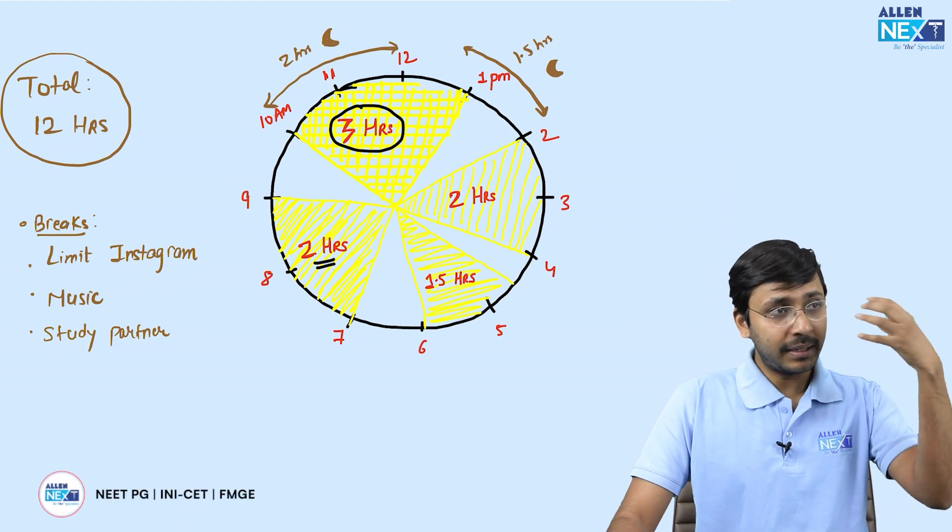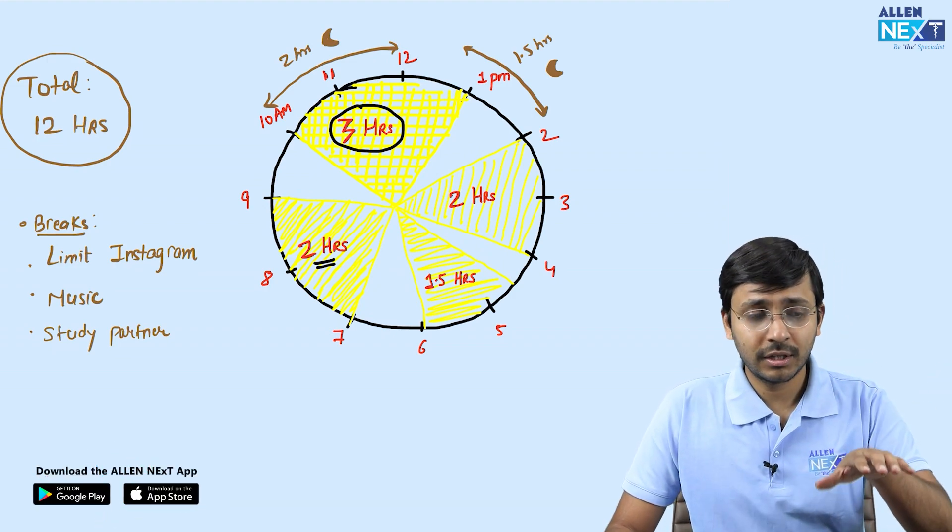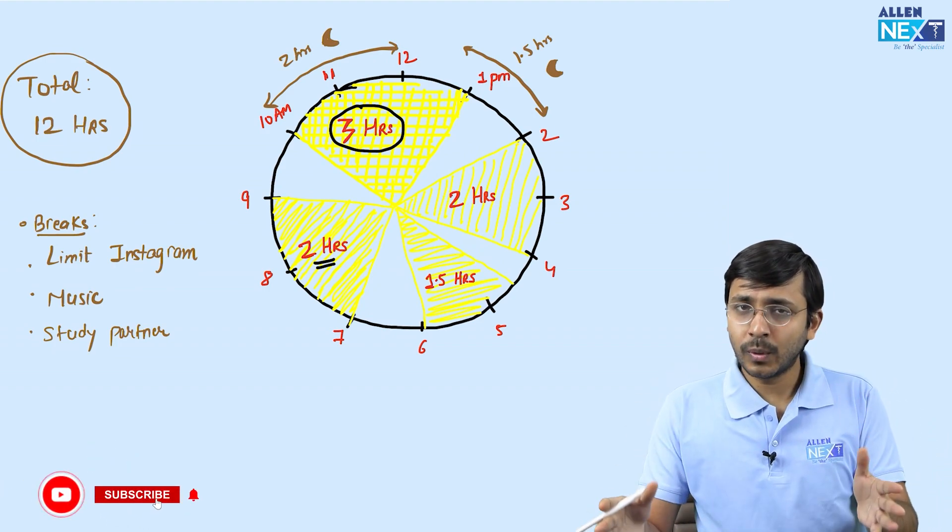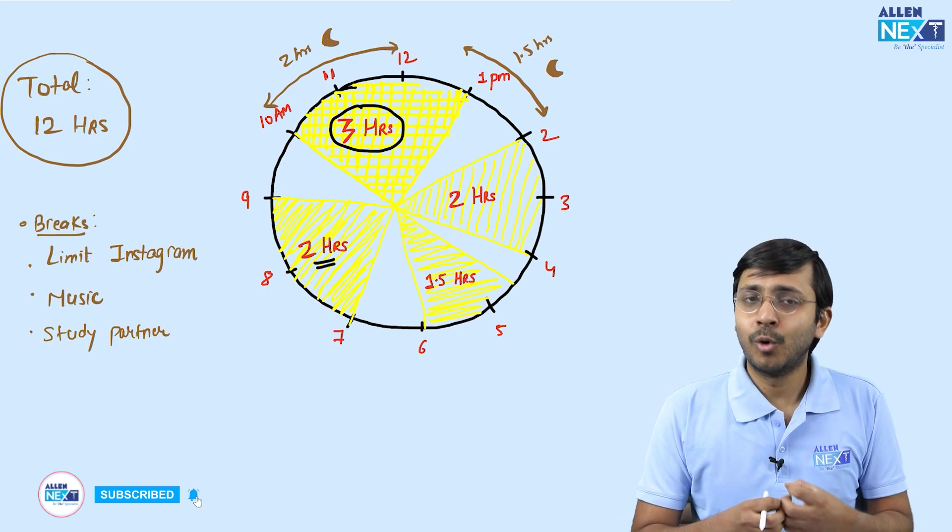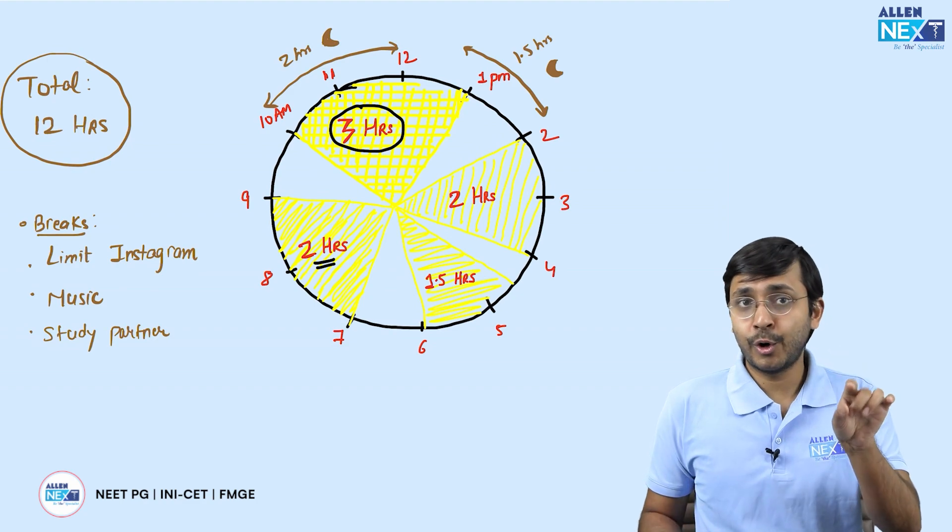When you are sitting for 3 hours in the morning at 10 a.m., in the first 30 minutes revise what you studied the previous day, then the next 30 minutes do previous year questions of the subject that you are studying today, and the next 2 hours will automatically get you in the mode of studying. This 10 to 1 p.m. study session in the morning is very important.